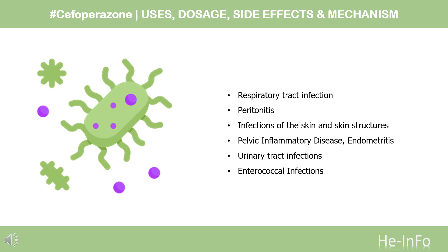4. Infections of the skin and skin structures caused by S. aureus (penicillinase and non-penicillinase-producing strains), S. pyogenes, and P. aeruginosa. 5. Pelvic inflammatory disease, endometritis, and other infections of the female genital tract caused by N. gonorrhoeae, S. epidermidis, S. agalactiae, E. coli, Clostridium spp., Bacteroides species including Bacteroides fragilis, and anaerobic gram-positive cocci. 6. Urinary tract infections caused by Escherichia coli and Pseudomonas aeruginosa. 7. Enterococcal infections.